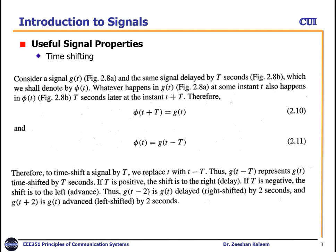Useful signal properties. There are a number of properties we will study here. For example, time shifting — as the name suggests. Consider a signal g(t), the original signal, and the same signal delayed by T seconds, which we shall denote by phi(t).